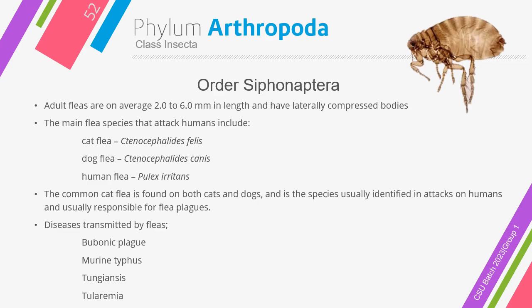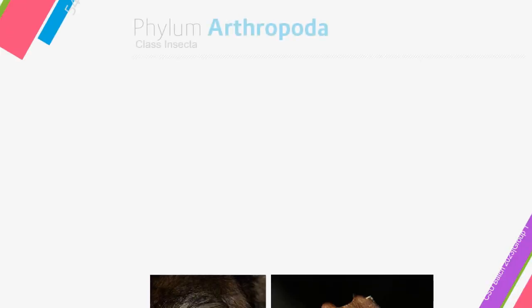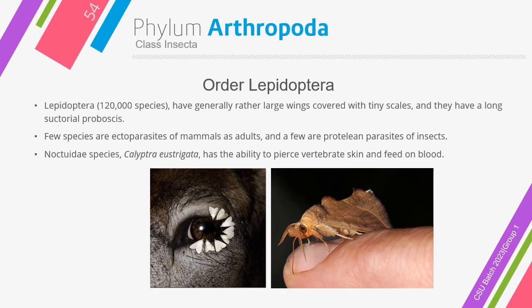Still under the class Insecta is Order Diptera. The name fly applies to insects that have a pair of wings on their mesothorax and a reduced pair known as halteres on their metathorax. Diptera stands out as by far the most medically important. The five general types are: mosquito, horsefly, housefly, stablefly, and lousefly. Finally, we have Order Lepidoptera. Lepidoptera includes 120,000 species, have generally rather large wings covered with tiny scales, and they have a long suctorial proboscis. Few species are ectoparasites of mammals as adults and a few are prolean parasites of insects. Noctuidae species or Calyptra eustrigata has the ability to pierce vertebrate skin and feed on blood.